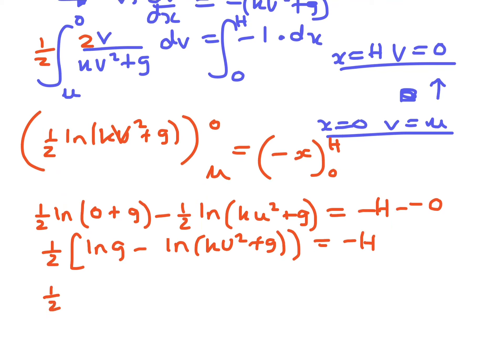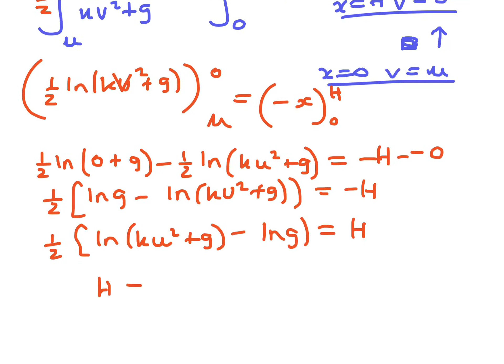If you flip that around and change the sign, ln of ku squared plus g minus ln g equals h. So the max height h will be a half ln of ku squared plus g over g.